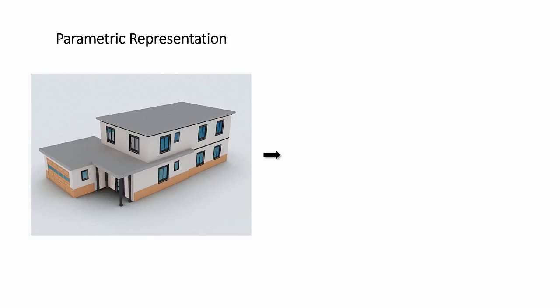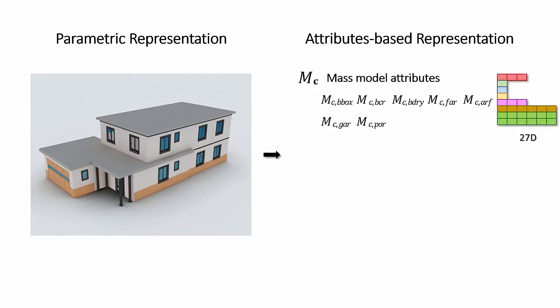Our attribute-based building representation overcomes this problem. Each building is described by a fixed set of attributes classified into three categories. Firstly, seven attributes are defined to describe the mass model of a building. The attributes can be multi-dimensional, so we show each dimension as a colored box.